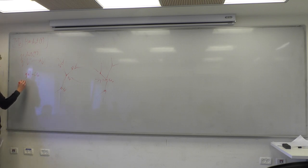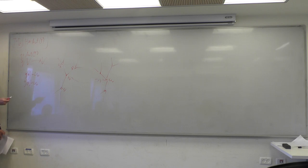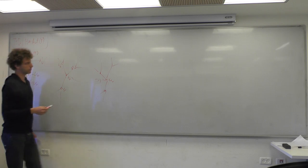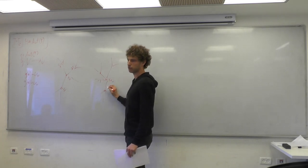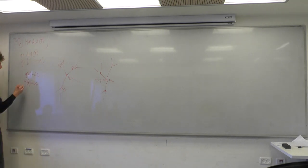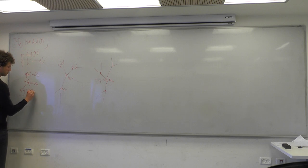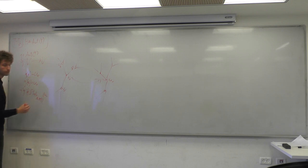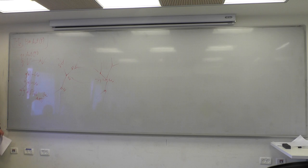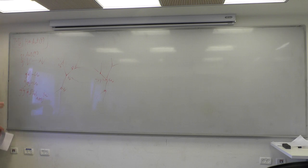Now suppose I have some g′ which acts on v₀ the same as g. As mentioned in Gil's talk, these two differ only by some action of the stabilizer of u₀. We can see that g⁻¹g′ lies in the stabilizer of T at u₀. By stabilizer I always mean the pointwise stabilizer.